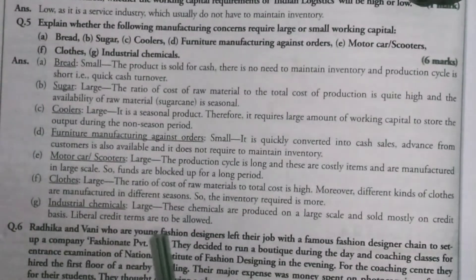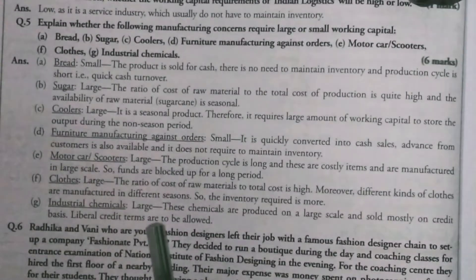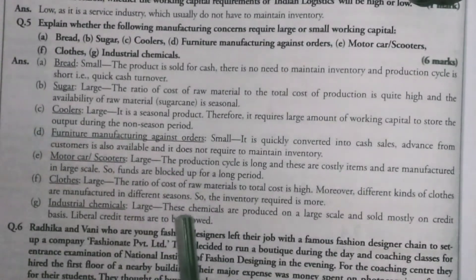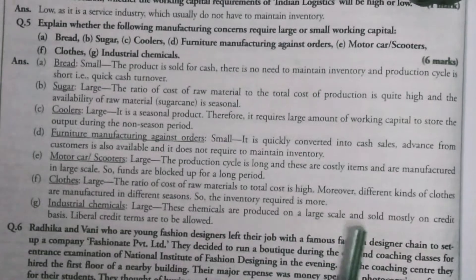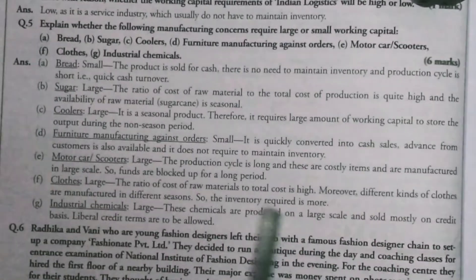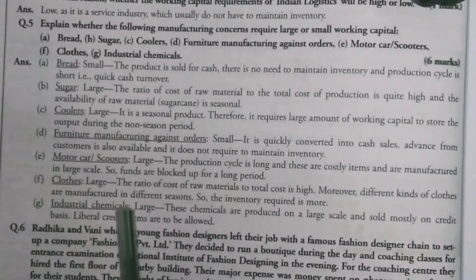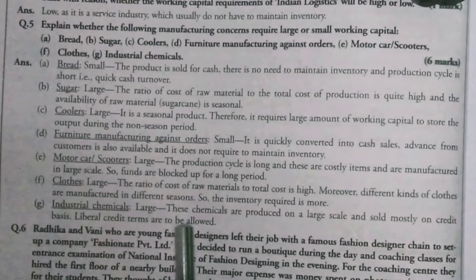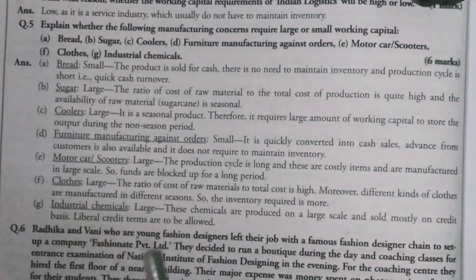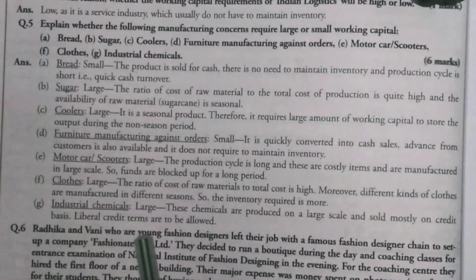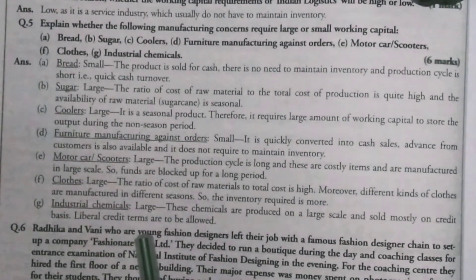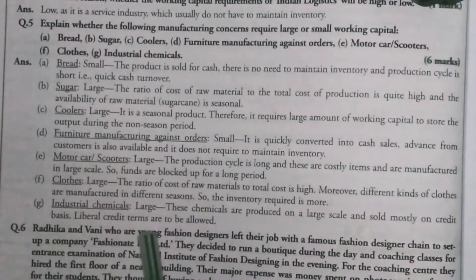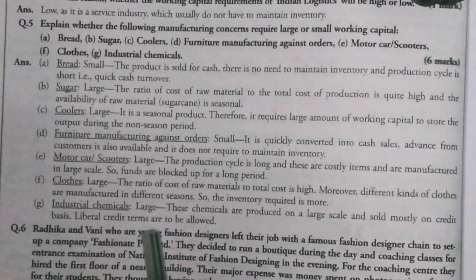For industrial chemicals, we need large working capital because these chemicals are produced on a large scale and sold mostly on a credit basis. Liberal credit terms are also allowed, so with a liberal credit policy, we need more working capital.